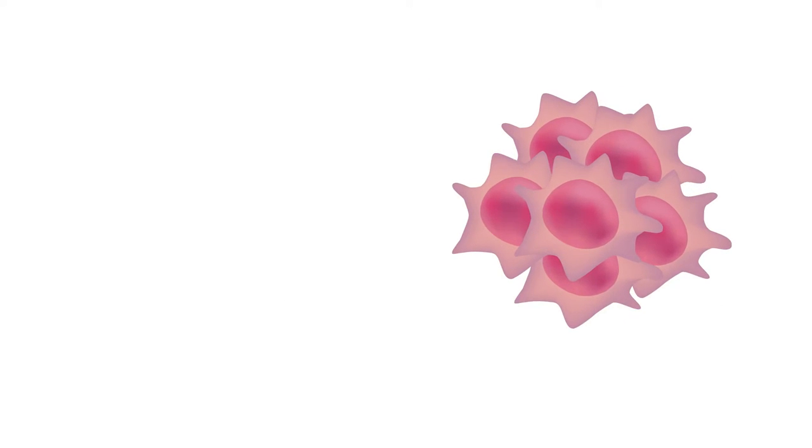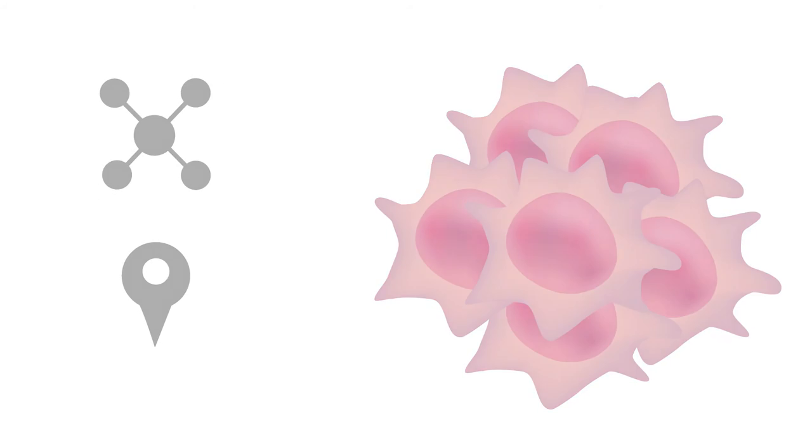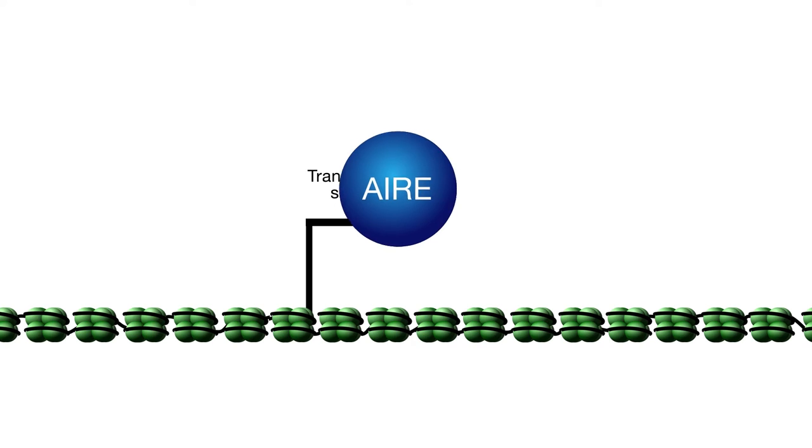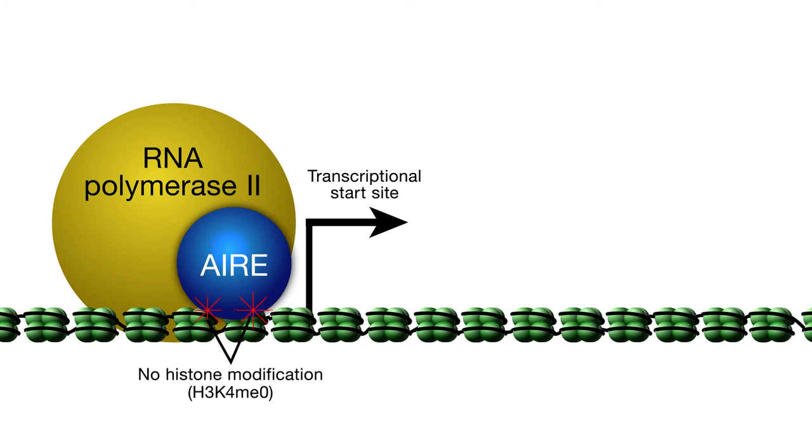The key seems to be in AIRE's numerous binding partners and in its location. AIRE is found at the transcriptional start site of most genes, along with stalled RNA polymerase II. AIRE is associated with silent chromatin, which allows it to act on genes that are off in most cell types and turn them on in mTECs.